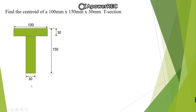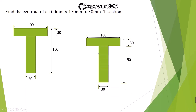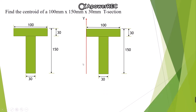We mark all the dimensions. The top rectangle is known as the flange of the T-section and the bottom rectangle is known as the web. To locate the centroid of any section, the first step is to identify the reference axis. We select a vertical axis passing through the left end of the T-section, denoted by Y, and an axis passing through the base of the T-section as the second reference axis, denoted by X.